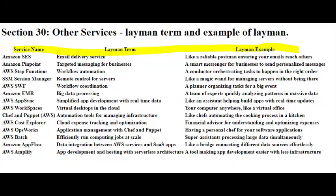Imagine you're hosting a dinner party and you have multiple dishes to prepare. Each dish requires specific ingredients, cooking times, and techniques. AWS OpsWorks is similar, but for your software applications. You have different components in your application — databases, web servers, and more — and each needs to be set up and managed just right. With AWS OpsWorks, it's like having a chef who follows a recipe, your configuration, to prepare and serve each component of your application.